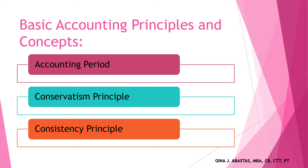Next, we have the conservatism principle, also known as prudence. In case of doubt, assets and income should not be overstated, while liabilities and expenses should not be understated. This principle gives guidance on how to record uncertain events and estimates, stating that one should always err on the most conservative side of any transaction. This means minimizing profits by recording uncertain losses or expenses and not recording uncertain or estimated gains — assume losses rather than gains.